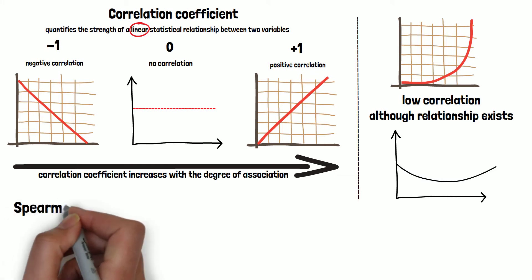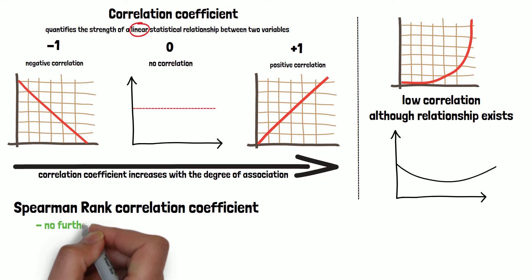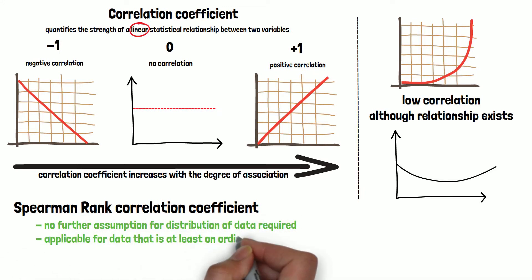Most commonly used is the Spearman-rank correlation coefficient. The advantage of the Spearman-rank correlation is that it does not require any further assumptions about the distribution of the data, and it is applicable for data that is at least on an ordinal scale.